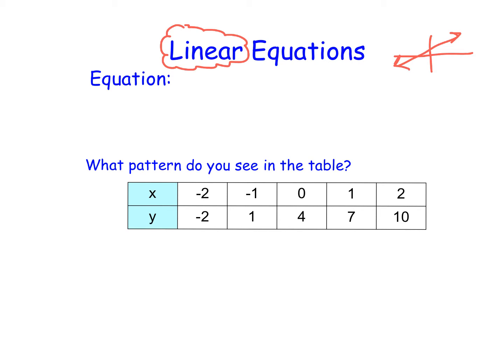If I look at just the x values first, I notice that as I move from left to right, I'm always adding 1 to my x values. And then if I look at the y values, I notice that I'm always adding 3. As x increases by 1, y always increases by 3.